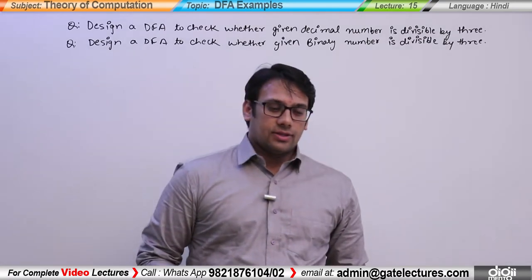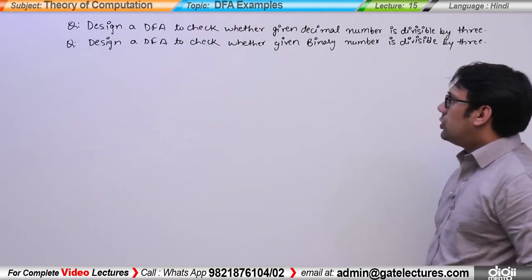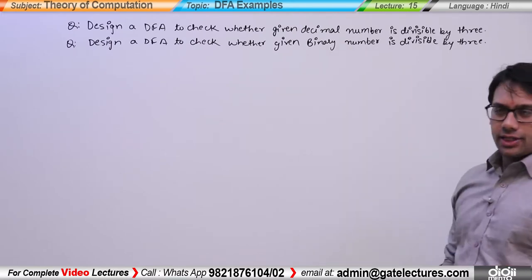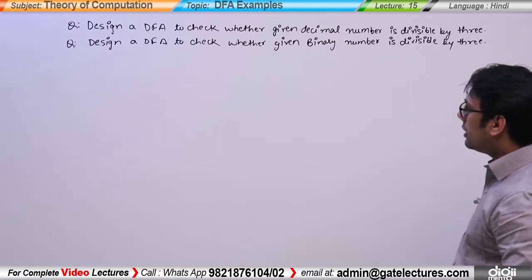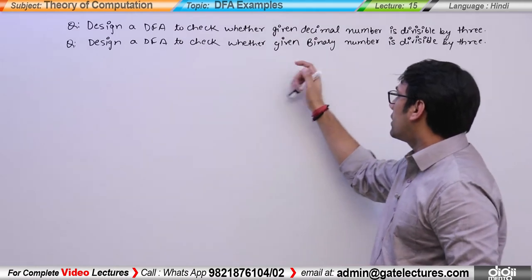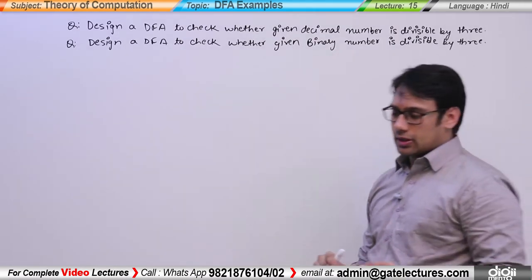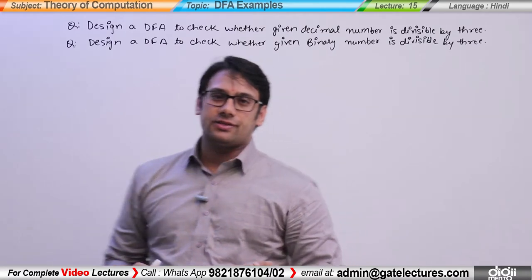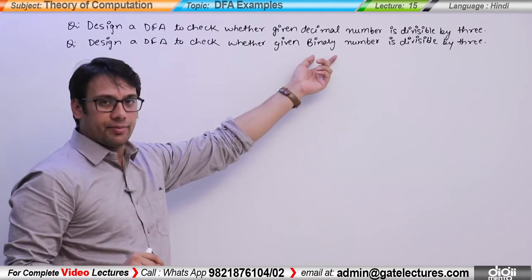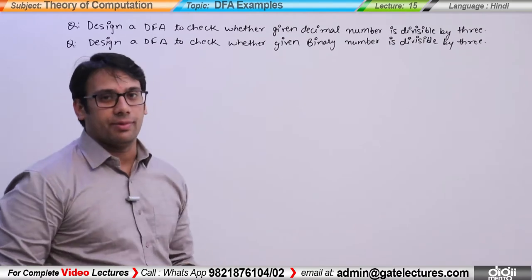Design a DFA to check whether a decimal number is divisible by 3. The second question is: design a DFA to check whether a given binary number is divisible by 3. The major difference between the two questions is that one case involves binary numbers and the other involves decimal numbers.